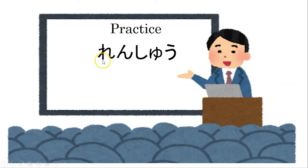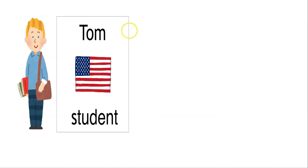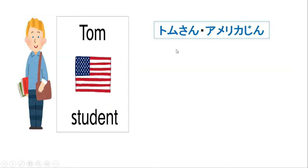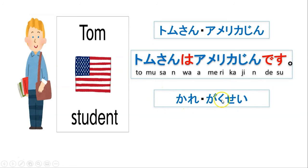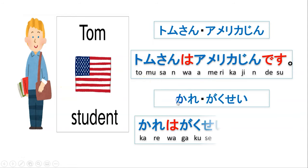Let's have a practice — renshu. Ang renshu ay 'practice' in English. Kayo naman gagawa ng sentence. Bibigyan ko kayo ng example. Si Tom, American siya, studyante din. Tom-san wa Amerikajin desu. Kare wa Gakusei desu. Madali lang — wa particle at desu lang, papalit-palitan lang natin yung noun. Number 1: John-san, Igirisjin — British si John-san. John-san wa Igirisjin desu. He is a doctor: Kare wa isha desu.